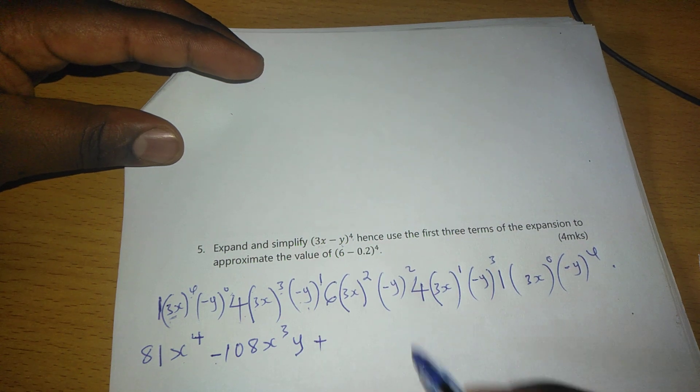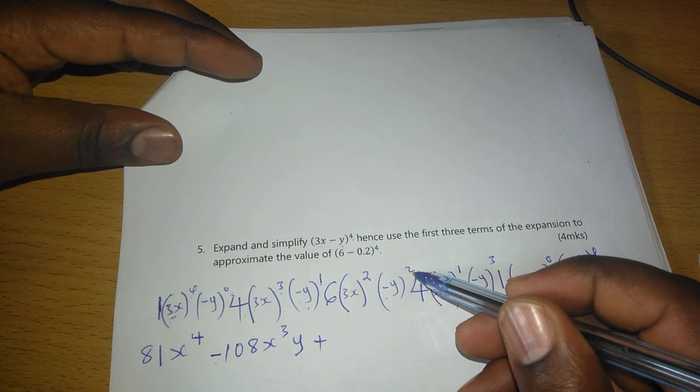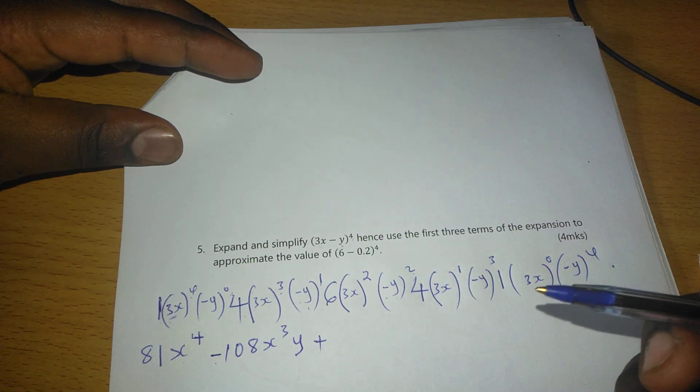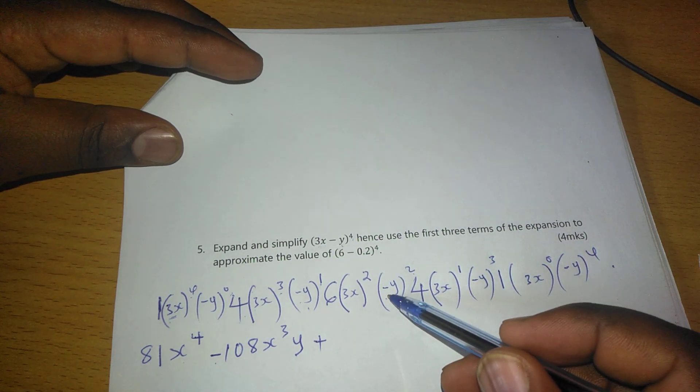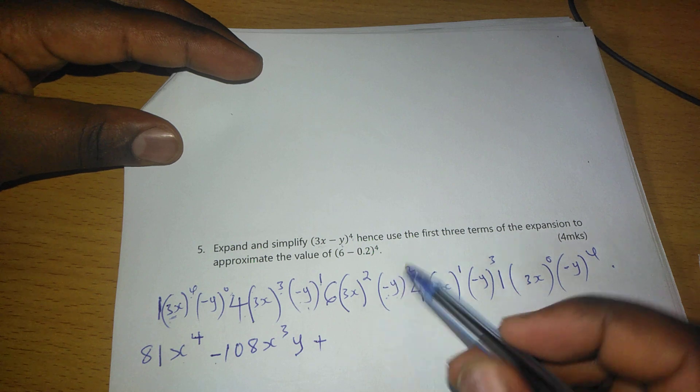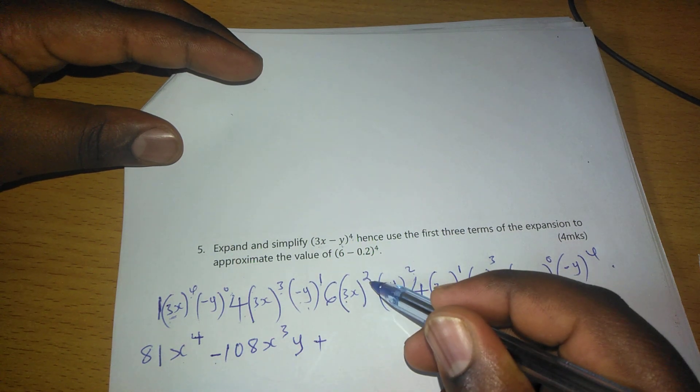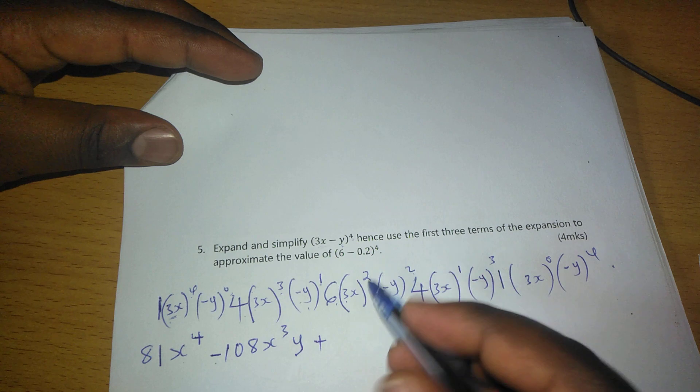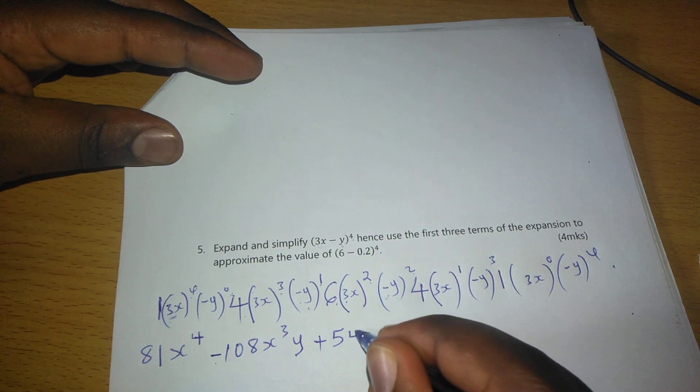Then the next is going to be, when we have -y squared, we get y squared, such that the negative cancels because the y's are 2. Then we will have 3^2 becoming 9 times 6, 54. So 54x^2y^2.